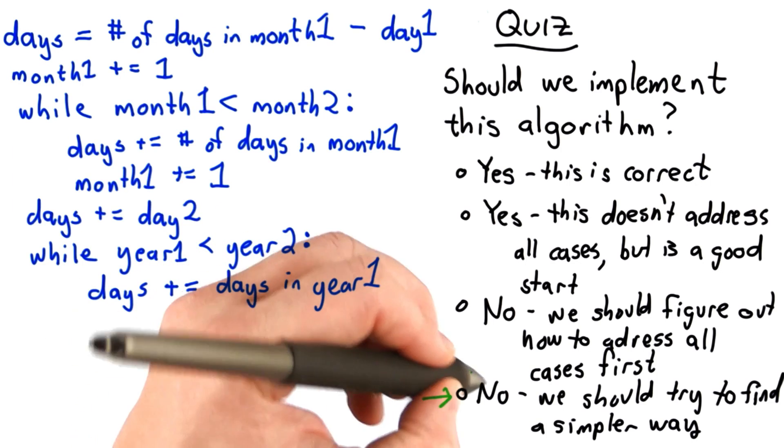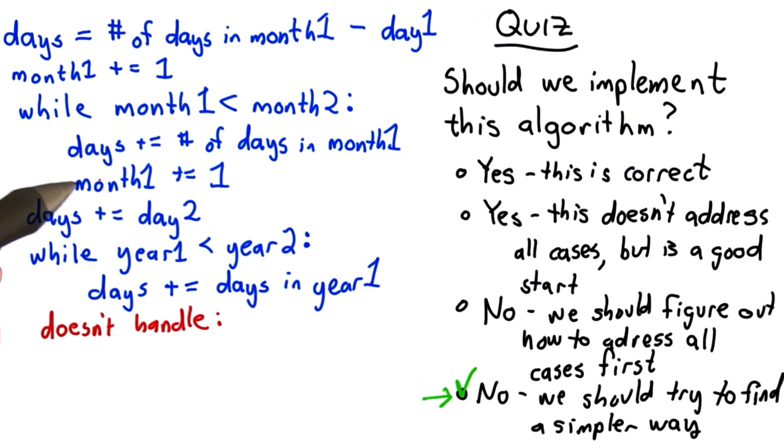I'm going to argue that the best answer to this is no. This code is already fairly complex. It's got two loops in it, lots of statements, and it doesn't handle lots of cases.